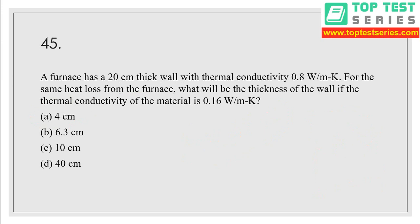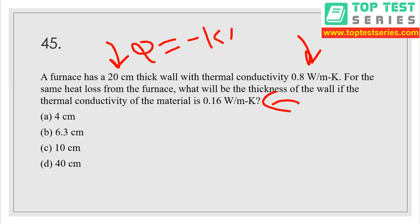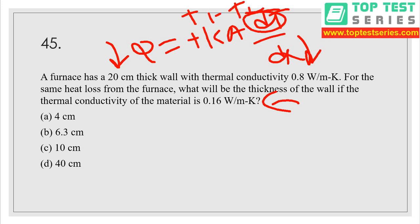Question number 45: a furnace has a 20 centimeter thick wall with thermal conductivity 0.8 watt per meter Kelvin. For the same heat loss from the furnace, what will be the thickness of the wall if thermal conductivity of the material is 0.16 watt per meter Kelvin? From Q = −K·A·dT/dx, writing dT as T1 minus T2, the negative sign is removed.